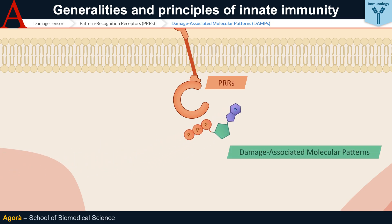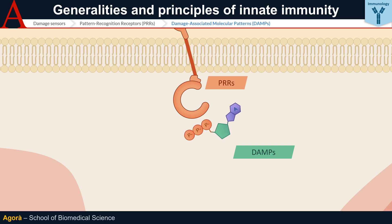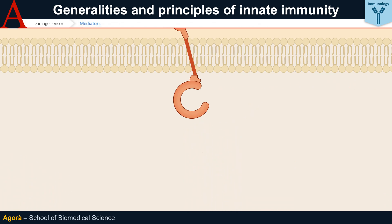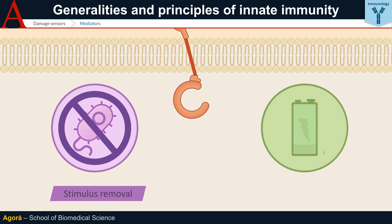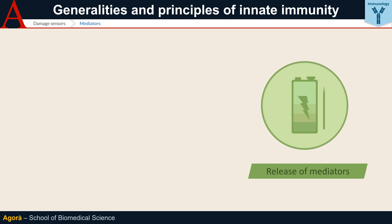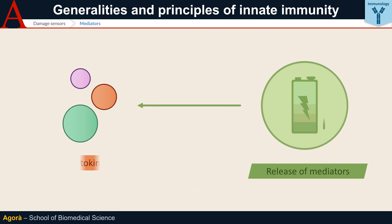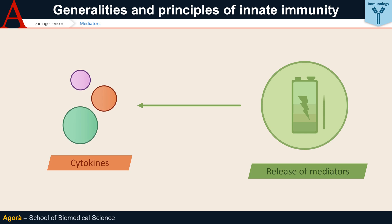In addition, PRRs are also able to recognise damage-associated molecular patterns, DAMPs — typically intracellular molecules which, if released externally, indicate cellular damage, for example the ATP molecule. Once activated, these receptors trigger a response in the cell that leads to two effects: first, if possible, killing and removal of the stimulus; and second, release of mediators responsible for propagating and supporting the immune response. To perform the latter function, cells of innate immunity produce cytokines — proteins able to influence the action of other cells, both immune and non-immune.